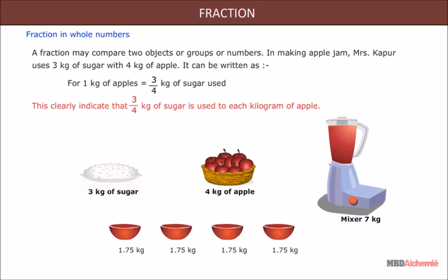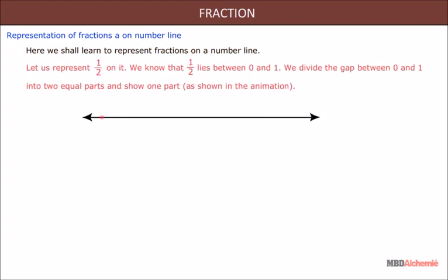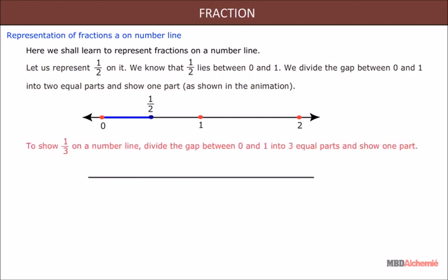Representation of fractions on a number line: Here we shall learn to represent fractions on a number line. Let us represent 1 upon 2 on it. We know that 1 upon 2 lies between zero and one. We divide the gap between zero and one into two equal parts and show one part. To show 1 upon 3 on a number line, divide the gap between zero and one into three equal parts and show one part.